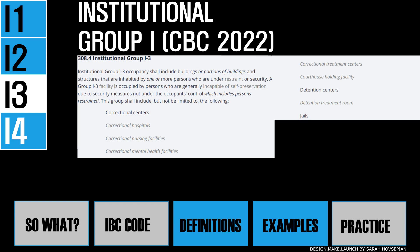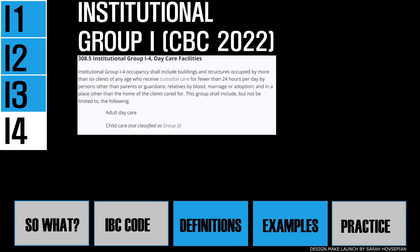Institutional group I4 occupancy is occupied by more than six clients of any age who receive custodial care for fewer than 24 hours per day by persons other than parents or guardians, and in a place other than the home of the clients cared for. This group includes, but is not limited to, adult daycare and childcare that is not classified as group E.